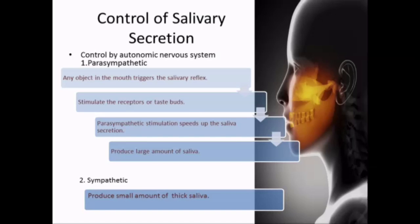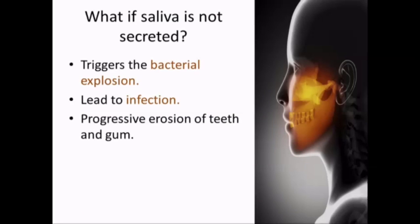How do humans control salivary secretion? It is controlled by two mechanisms: the parasympathetic pathway and the sympathetic pathway. In the parasympathetic pathway, any object in the mouth triggers the salivary reflex, stimulating the taste receptors, and parasympathetic stimulation speeds up saliva secretion, producing large amounts of saliva. In terms of sympathetic stimulation, it produces only a small amount of thick saliva, but the mechanism is still unknown. Sometimes saliva is not secreted, which triggers bacterial overgrowth, leading to infection. This infection can cause progressive erosion of the teeth and gums. This shows how important the salivary gland is, because without it, saliva is not secreted and we will get infected.